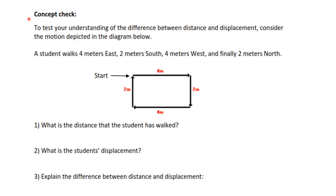Let's look at an example. A student walks 4 meters east, 2 meters south, 4 meters west, and then 2 meters north — they are back to where they started. The distance the student has walked is 4 + 2 + 4 + 2 = 12 meters. The student's displacement is 0 meters, because displacement is how far you've moved from your original position.